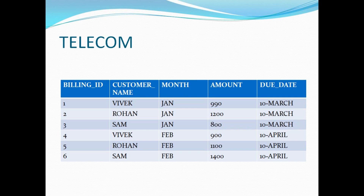The lowest level of detail identifiable from this billing table is the customer and their bill for a particular month. Now, if I want to further analyze how Vivek's bill amounted to 990 rupees for January, do I have that detail in the billing table? No — to fetch that detail I would have to dig further into the transaction table.